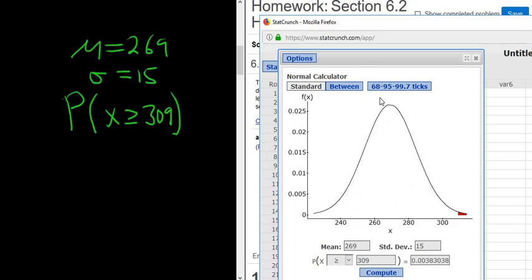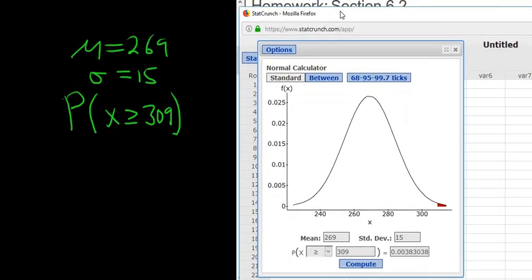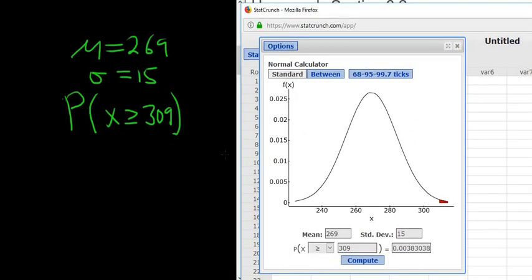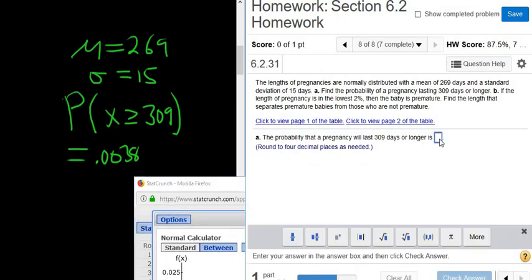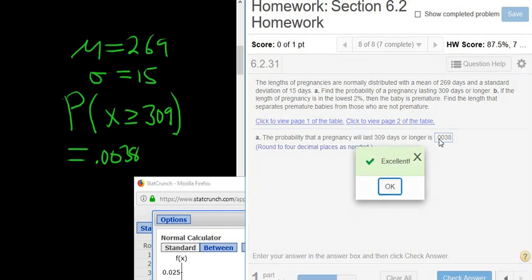So it looks like it wants four decimals, so 0.0038. I'll go ahead and write it down, so 0.0038. Let's type it in. 0.0038. Excellent.